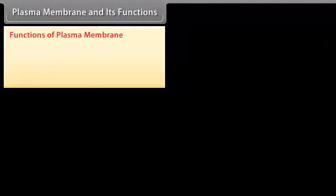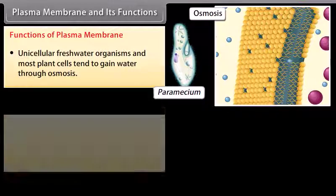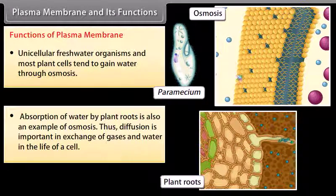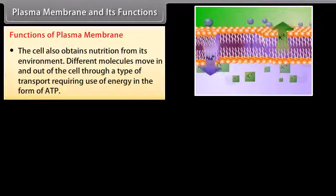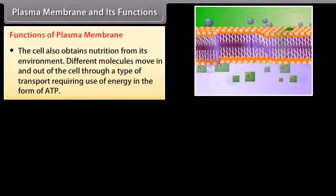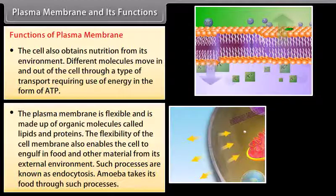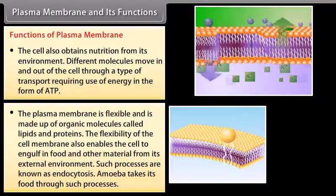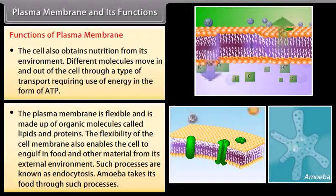Functions of plasma membrane: Unicellular freshwater organisms and most plant cells tend to gain water through osmosis. Absorption of water by plant roots is also an example of osmosis. Diffusion is important in exchange of gases and water in the life of a cell. The cell also obtains nutrition from its environment; different molecules move in and out of the cell through a type of transport requiring energy in the form of ATP. The plasma membrane is flexible and is made up of organic molecules called lipids and proteins. This flexibility enables the cell to engulf food and other materials from its external environment through a process known as endocytosis. Amoeba takes its food through such processes.